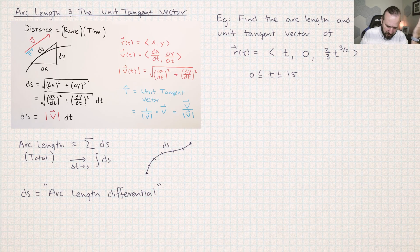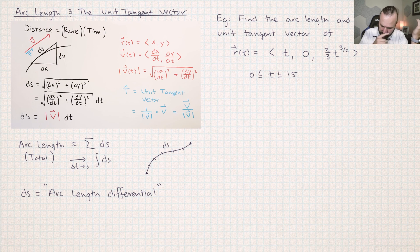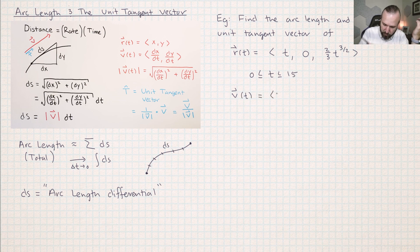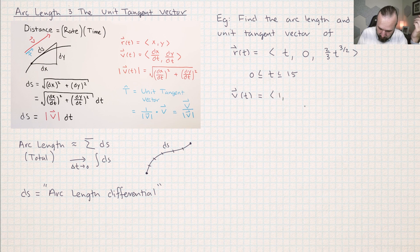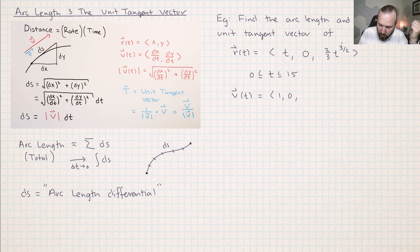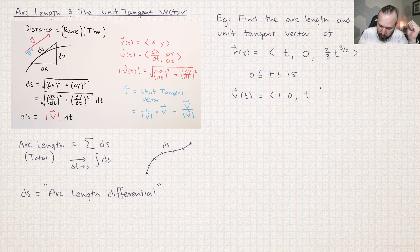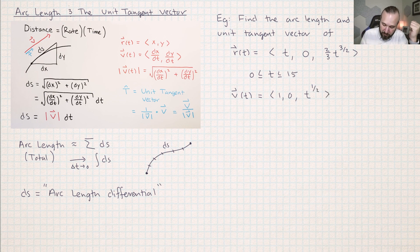So I've got r of t and I'm asked to calculate the arc length in the unit tangent vector. So I'm going to start by finding the velocity at any time. So I'm just taking derivatives of all the coordinates. So the derivative of t with respect to t is one and then zero is zero. So you can see if I use the power rule, I'm going to move this three halves and it's going to cancel with the two thirds. So this problem is kind of nice. And then three halves take away one is one half. So now I've calculated the velocity.